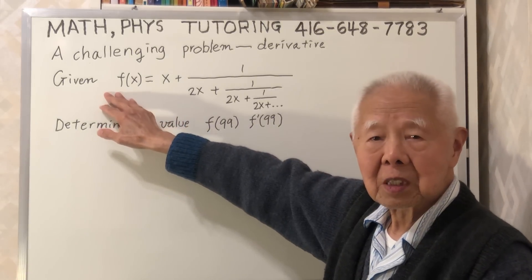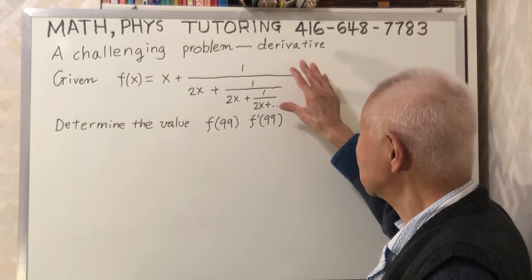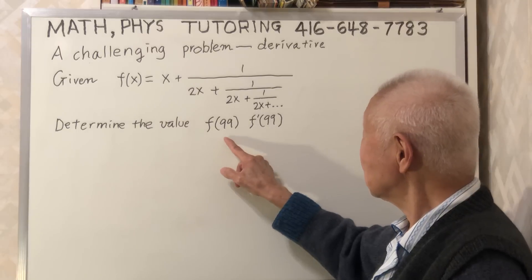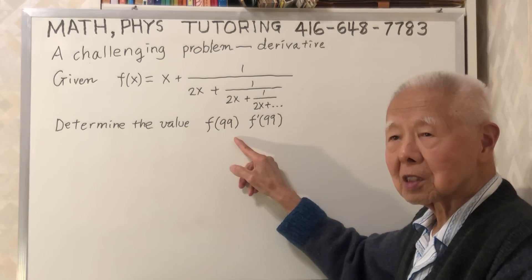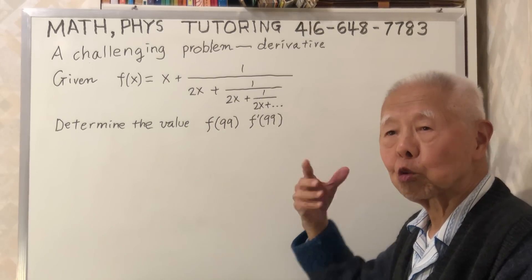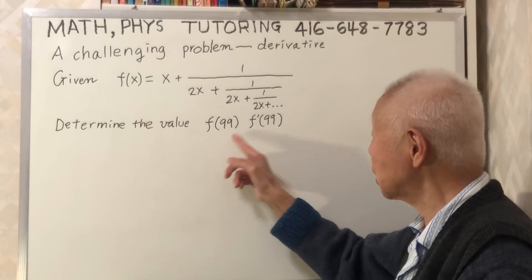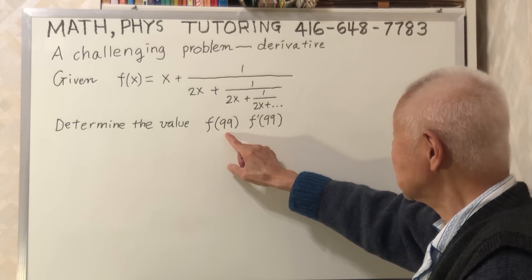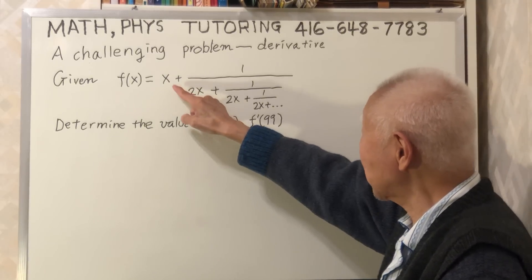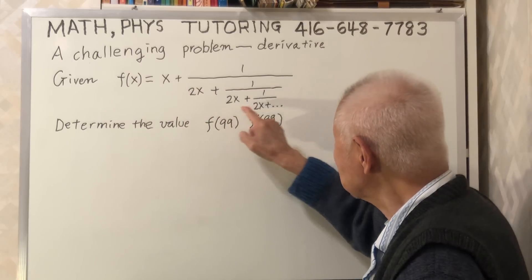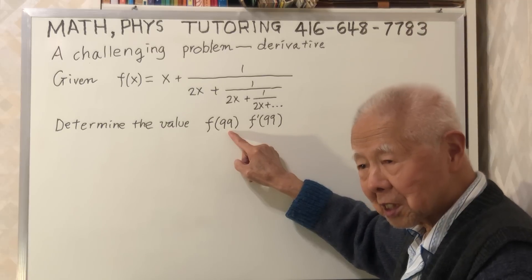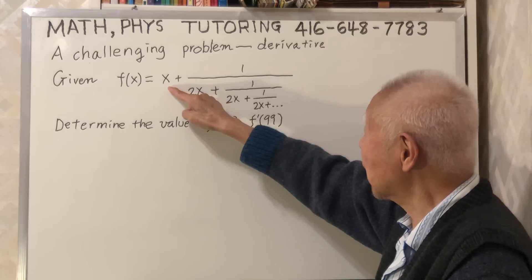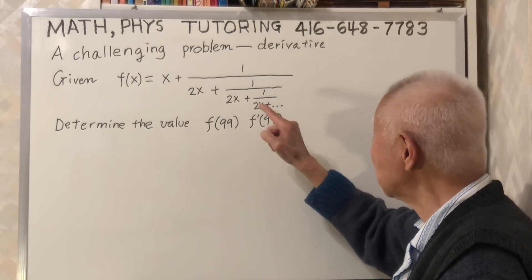Given this function, we want to determine the value of f(99) times f'(99). The meaning of this is you replace x by 99 and find the value.